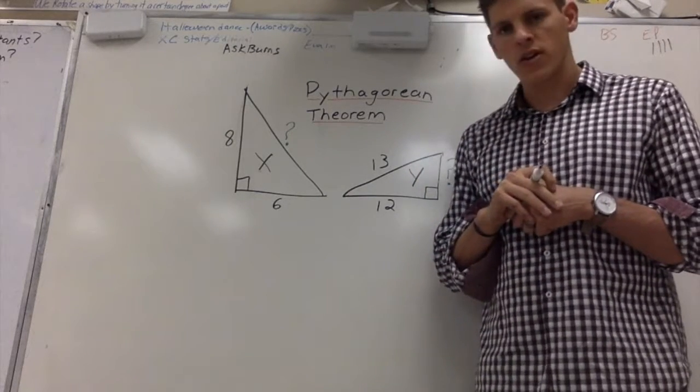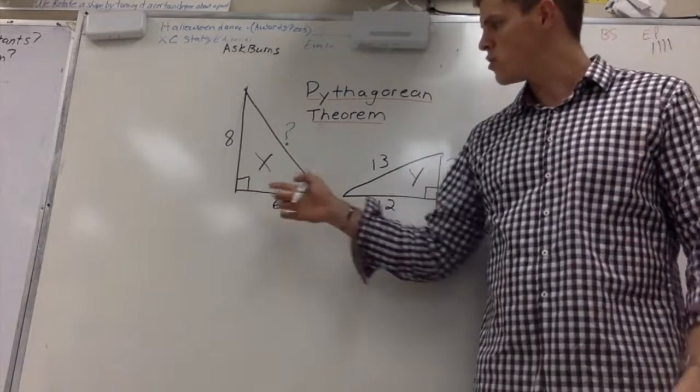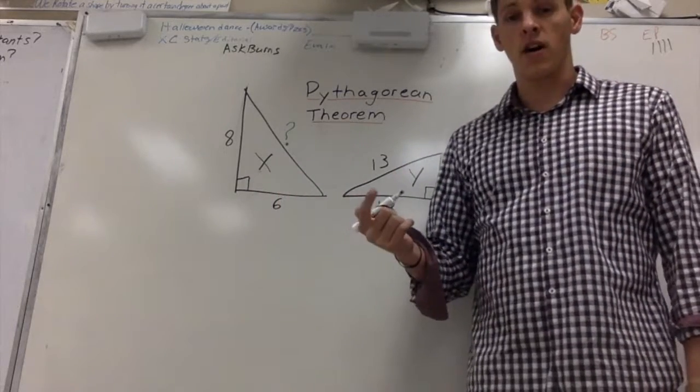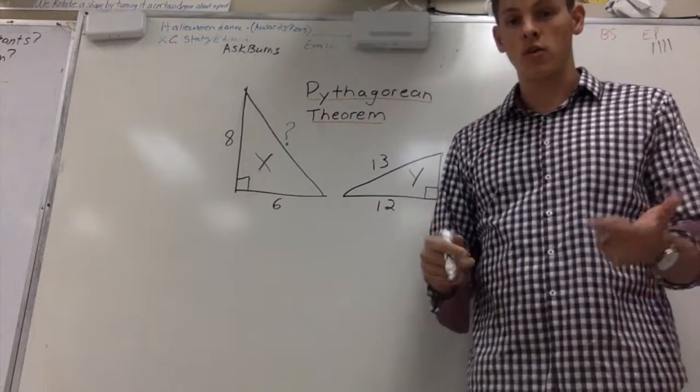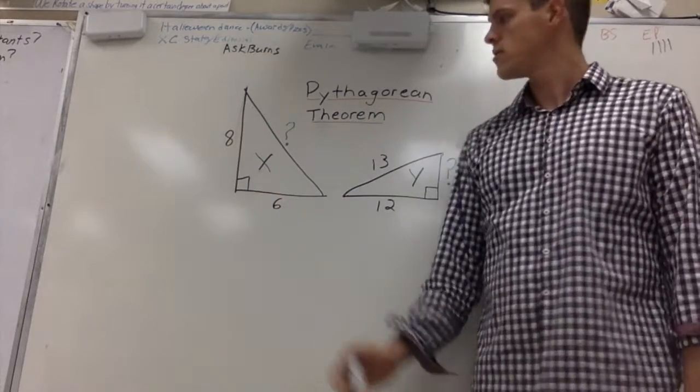First, I want to look at how do we know which side is which. We have two legs. The legs are the two lines that are closest to the right angle. We have our hypotenuse.